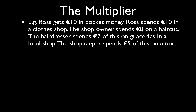The shop owner is now €10 richer. Income affects consumption, so the shop owner decides to get a haircut this week rather than next week — spending €8. A service has been produced. Total expenditure is now 10 + 8 = €18. Then the hairdresser decides to spend €7 on groceries. Total expenditure is now 10 + 8 + 7 = €25. All of this stems from Ross's initial spending.